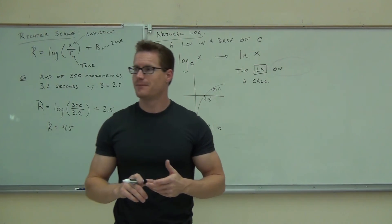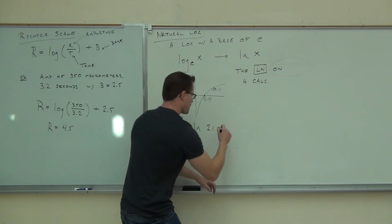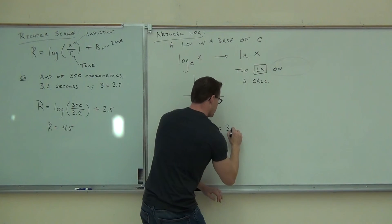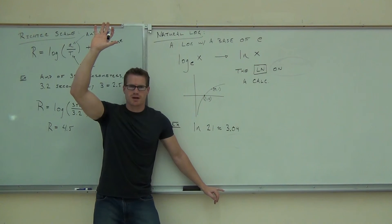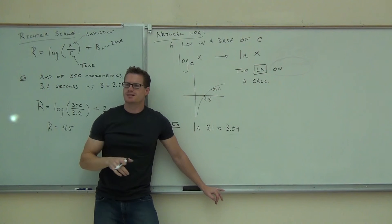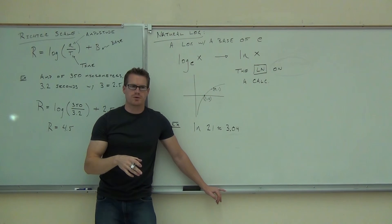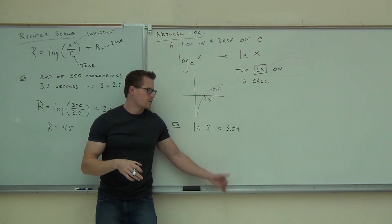Error. 3.04. 3.04 approximately? Yeah. How many people were able to find that if you have a calculator? Good. Now, wait a second. Look up here at the board with me real quick. What's it mean? 3.04.